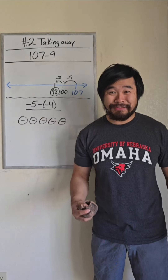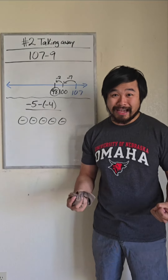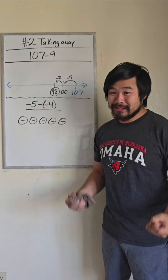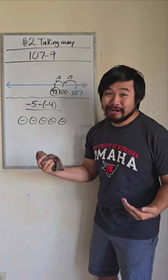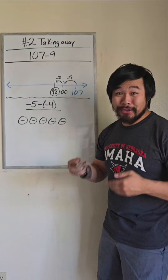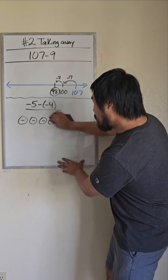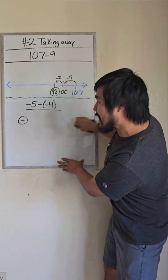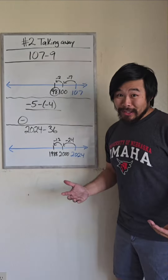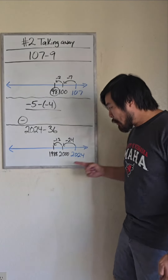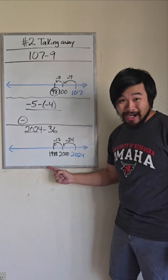This idea of takeaway works well for some problems when we're subtracting a negative. For example, we can read this as negative 5 take away negative 4 — so literally take away negative 4 — and we see that the answer is negative 1. And if you want to figure out what year someone was born in, we can use this idea of takeaway as well.